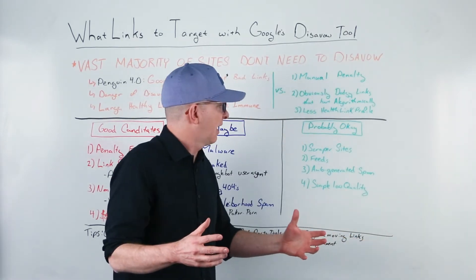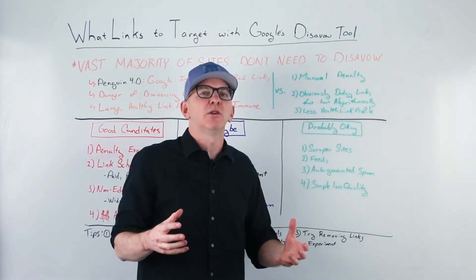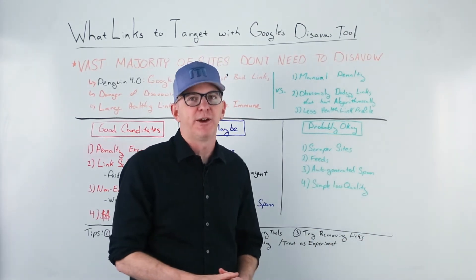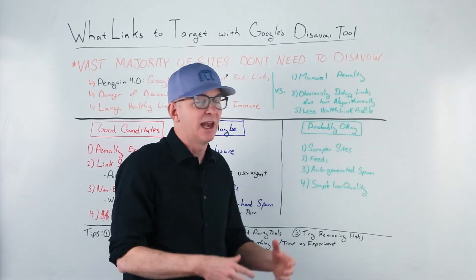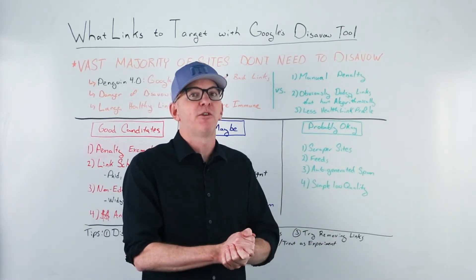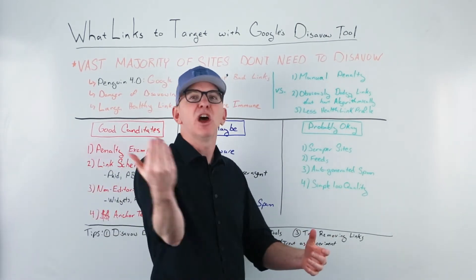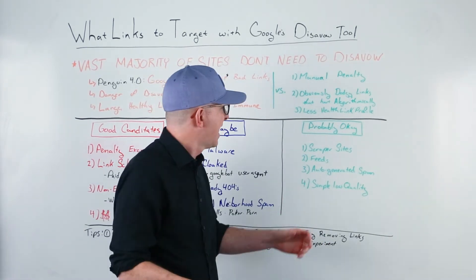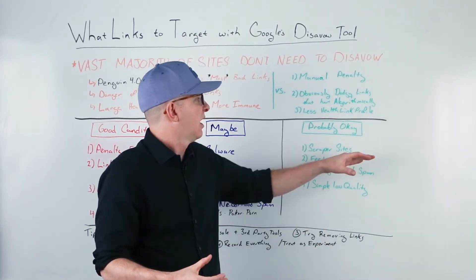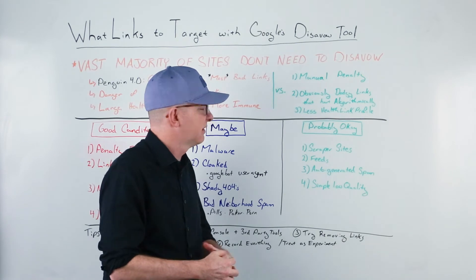We often see people disavowing links that maybe aren't that bad. It's hard to tell what Google considers a good, valuable, or poor link. There is a danger in throwing too much in your disavow file — if you do that, those links won't count and your traffic might go down. One thing I don't personally put in my disavow file are scraper sites. You get a good link in an online magazine and then 100 other sites copy it. Google is getting better at assigning the authority of those links back to the original site, so I don't find putting them in the disavow file has really helped.